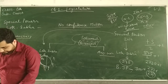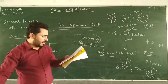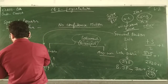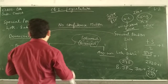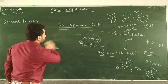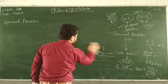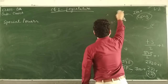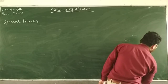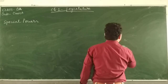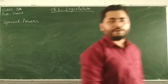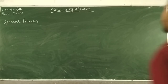Now the special powers of Rajya Sabha: only Rajya Sabha can declare a subject of the state list to be of national importance and ask Lok Sabha to legislate on it. To understand this, we need to understand subject lists. There are three lists: union list, state list, and concurrent list.